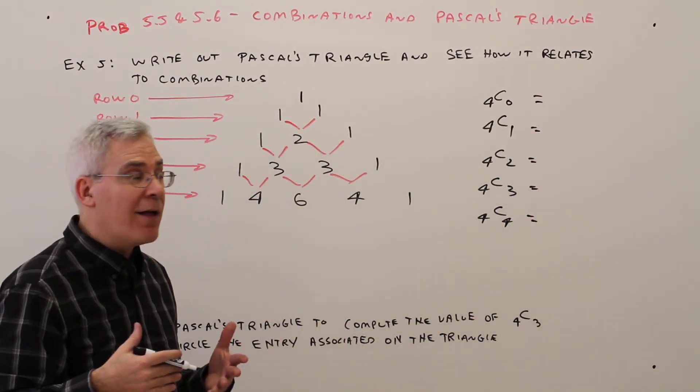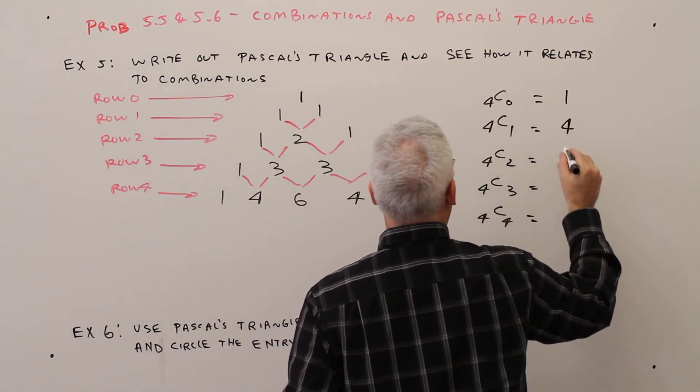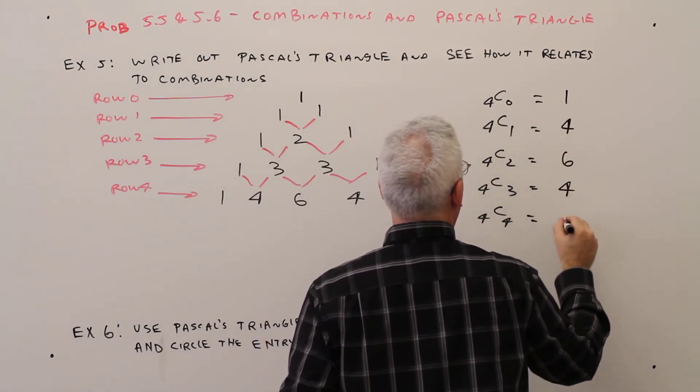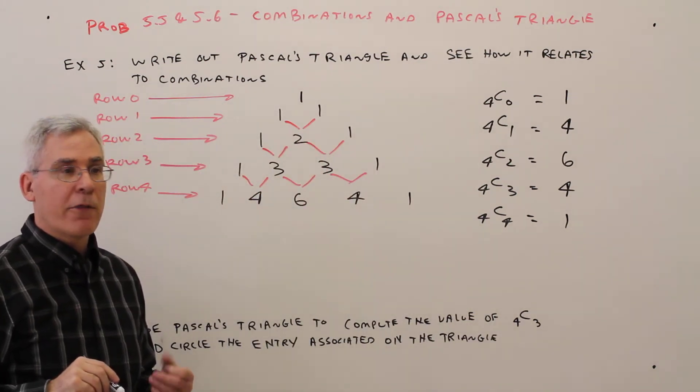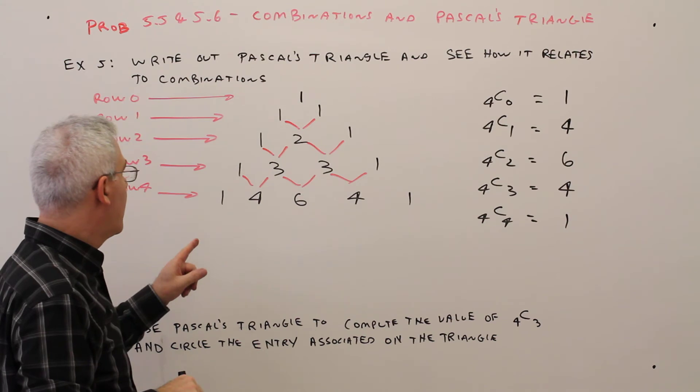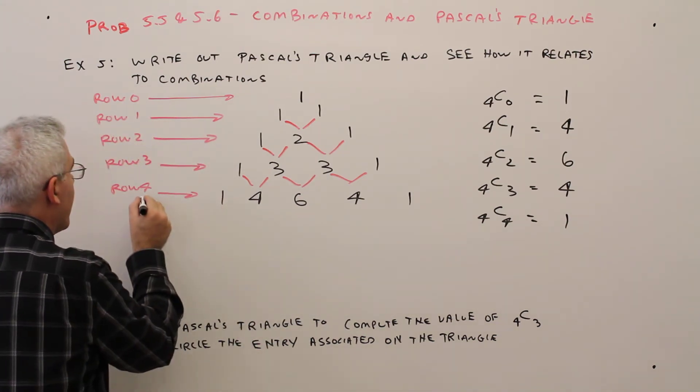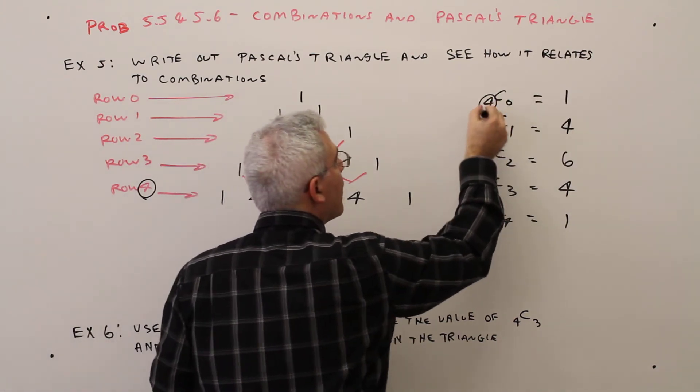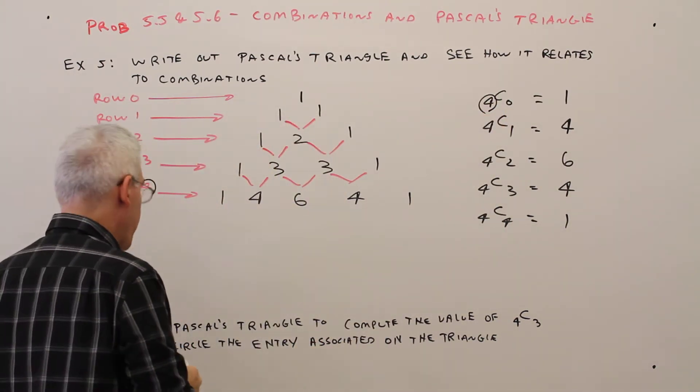If you were to compute that with your calculator, you'd get the following results: 1, 4, 6, 4, and 1. And then hopefully you see a pattern, that's just these values right here, row 4, total objects of 4. And again, we've got that 0 aspect.